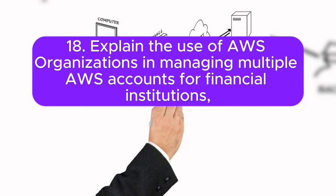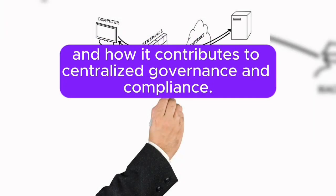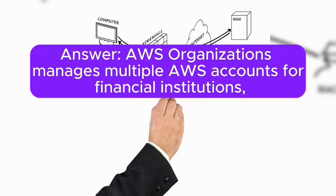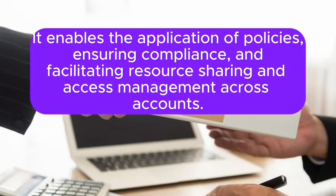Question 18: Explain the use of AWS Organizations in managing multiple AWS accounts for financial institutions, and how it contributes to centralized governance and compliance. Answer: AWS Organizations manages multiple AWS accounts for financial institutions, providing a hierarchical structure for centralized governance. It enables the application of policies, ensuring compliance, and facilitating resource sharing and access management across accounts.